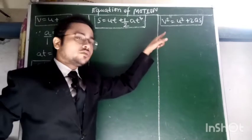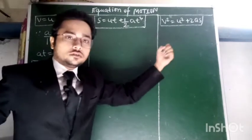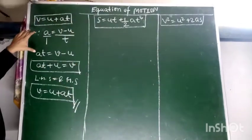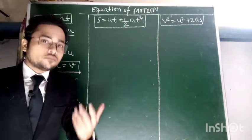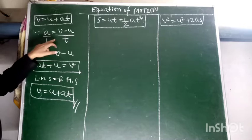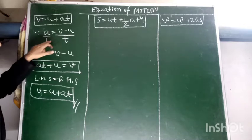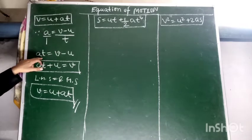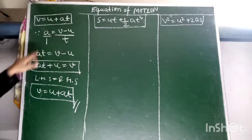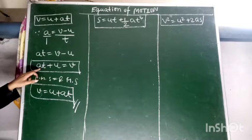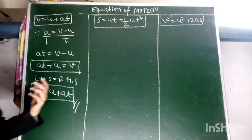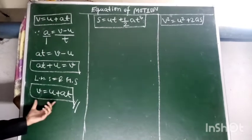Here we will prove our first equation. Since we know that acceleration equals change in velocity upon time, after cross multiplication we get AT equals V minus U. We will transfer minus U to get AT plus U equals V. Since LHS equals RHS, we get V equals U plus AT.